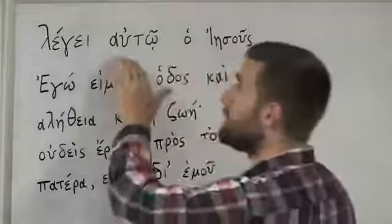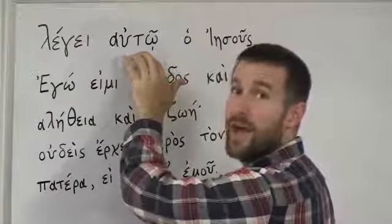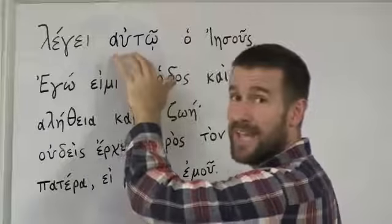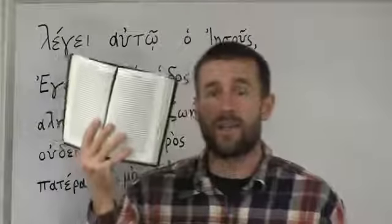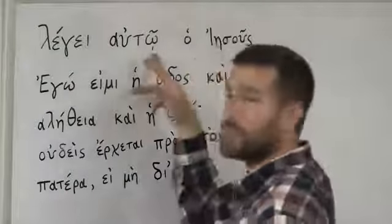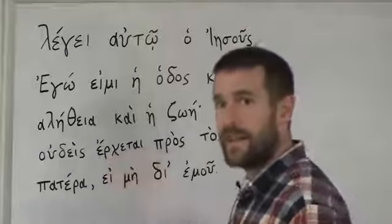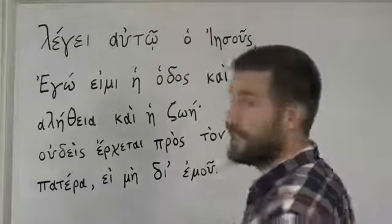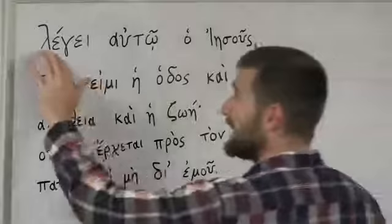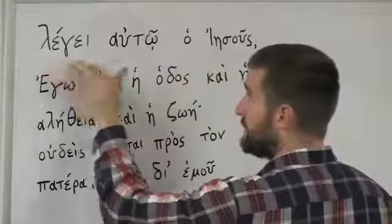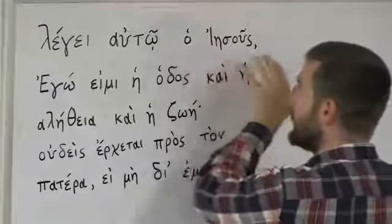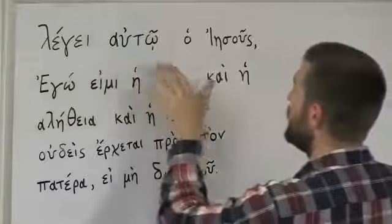So in this case, autō means 'to him' or 'unto him' — it's an indirect object, so it's in the dative case. When you're reading a Greek New Testament, the dative case is easy to spot in nouns and pronouns because of that iota subscript. So we've got legei autō — 'saith unto him,' dative case — ho Iēsous, Jesus. Legei autō ho Iēsous.